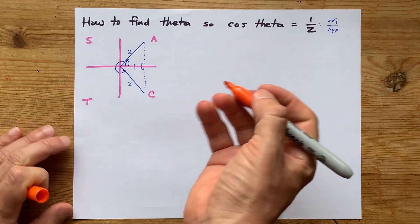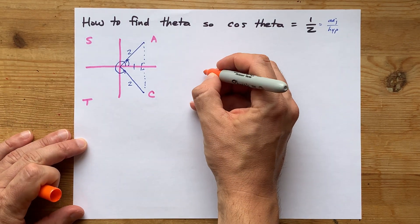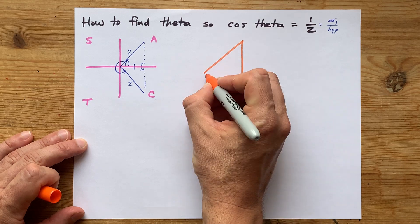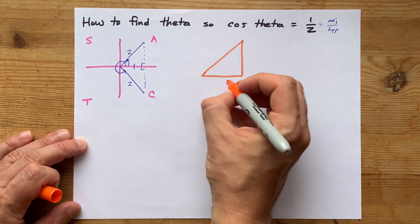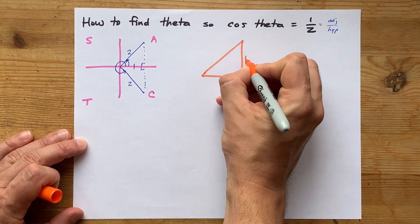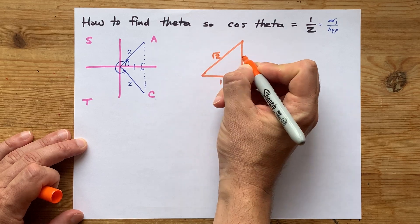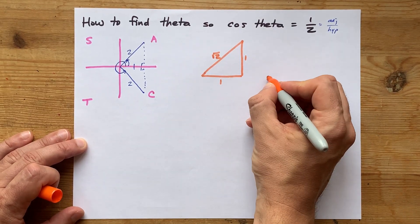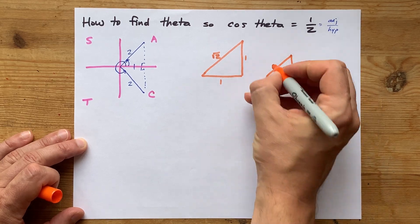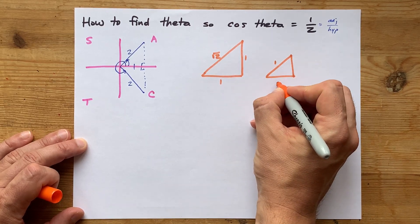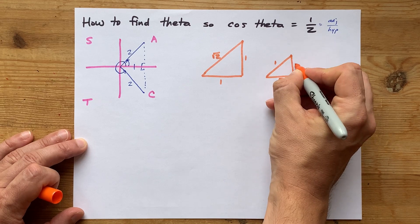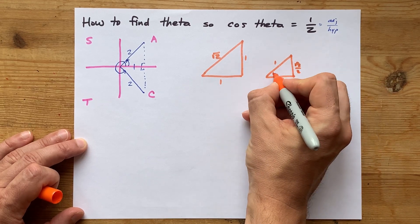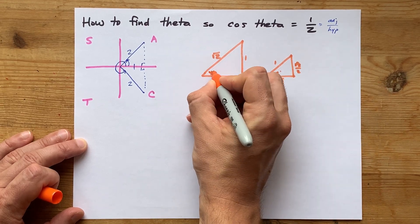Most teachers will have you memorizing a special triangle, or more than one. One of them is 1, 1, and root 2, or some similar triangle to that. Maybe it's 1 and root 2 over 2. That's the same triangle. That would mean these are 45 degree angles.